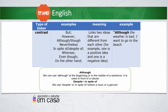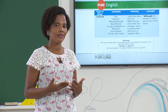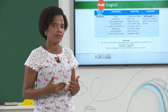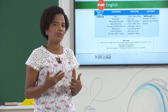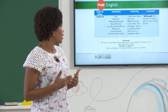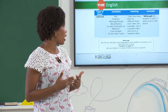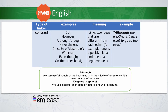Despite and in spite of are used before a noun or a gerund. So, the same example — but if we want to use 'despite' instead of 'although,' the sentence would be a little different: 'Despite the bad weather, I want to go to the beach.'